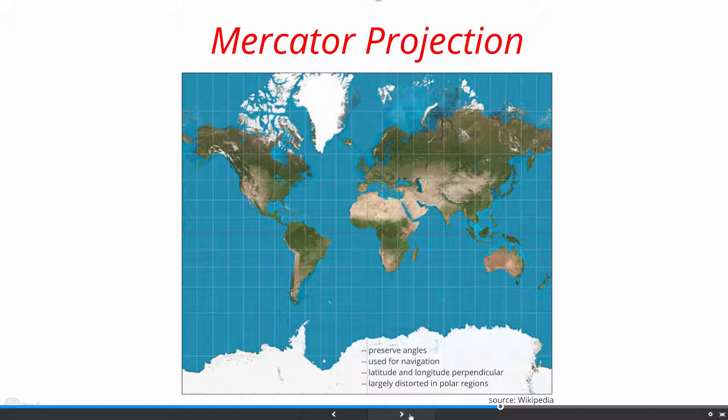For example, on the map Greenland looks roughly the same size as Africa. But in reality, Africa's area is 14 times greater than that of Greenland.